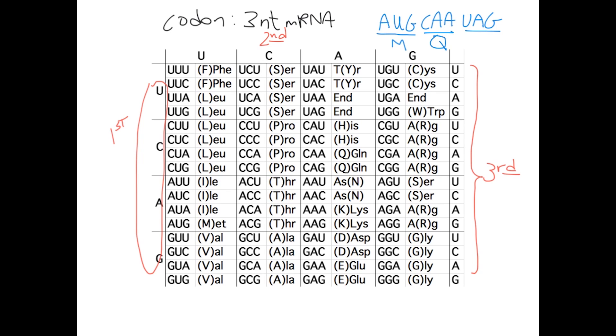And then the third codon here, UAG, is a stop codon, UAG end, and those are often represented as asterisks. Now you'll notice that again, as I've already said, there are 20 amino acids but there are 64 different codons in this table, which means there's going to be some redundancy. For example, here are two different codons, CAU and CAC, that both encode the amino acid histidine.